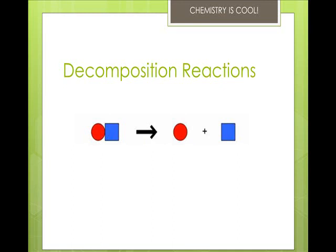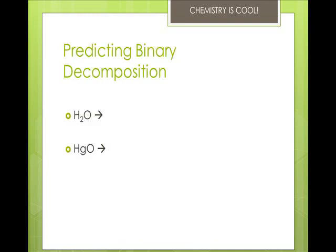Decomposition reactions means to fall apart. So one reactant falls apart into two or more elements or compounds. An example would be sodium chloride yielding sodium plus chlorine, or calcium carbonate yielding calcium oxide and carbon dioxide. You can predict the products if it's a binary compound, which means it's made up of only two elements, because this is going to fall apart into its separate elements. So let's take a look at binary decomposition. Water would decompose into hydrogen plus oxygen. Similarly, mercury 2 oxide would decompose into mercury and oxygen.